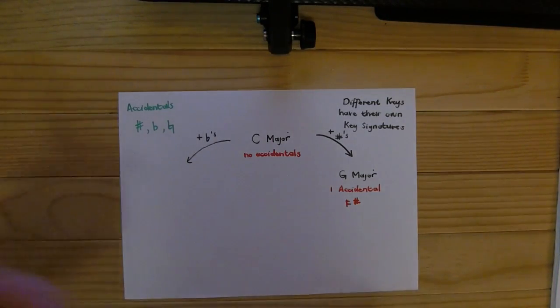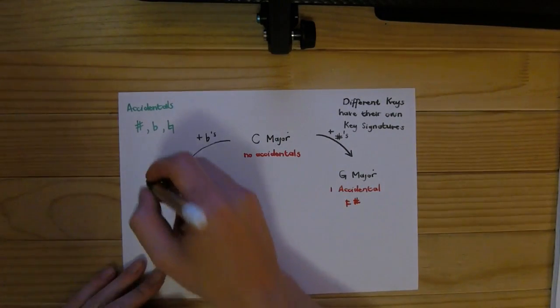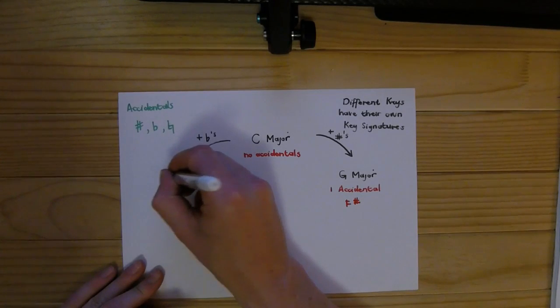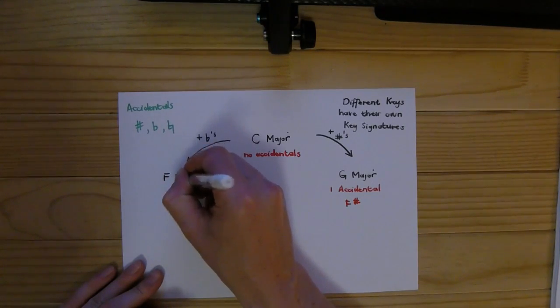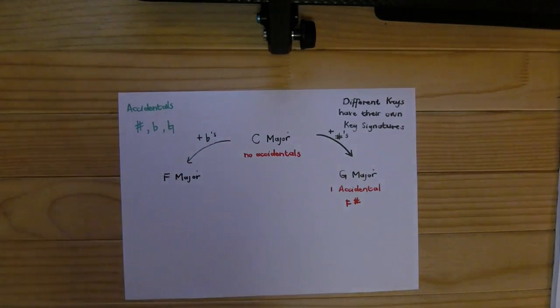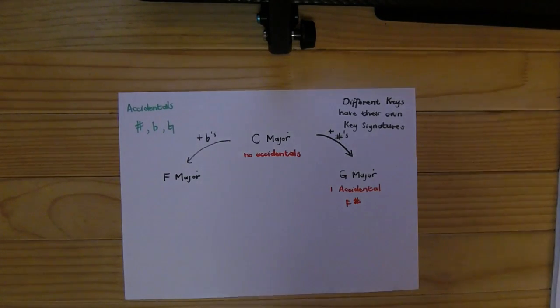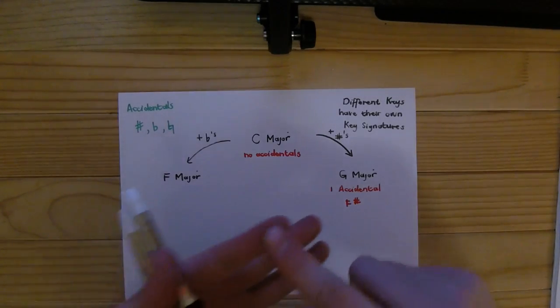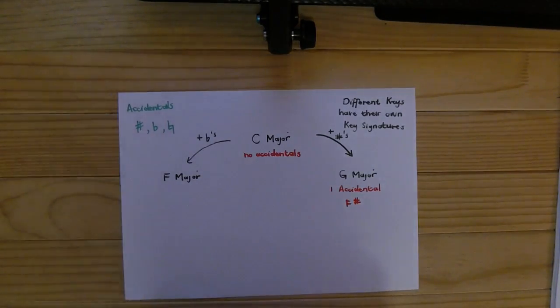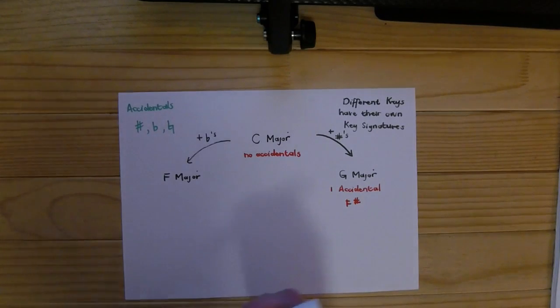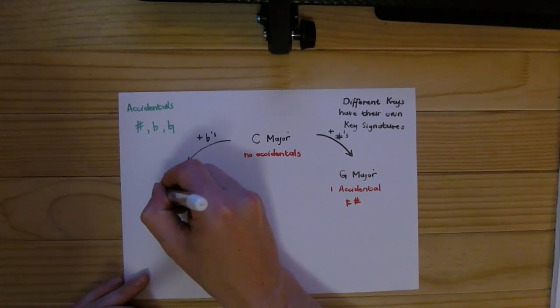If we go to the left, we'll see that F major is the next one. So we go down a fifth: C, B, A, G, F. F major. And F major also has one accidental.